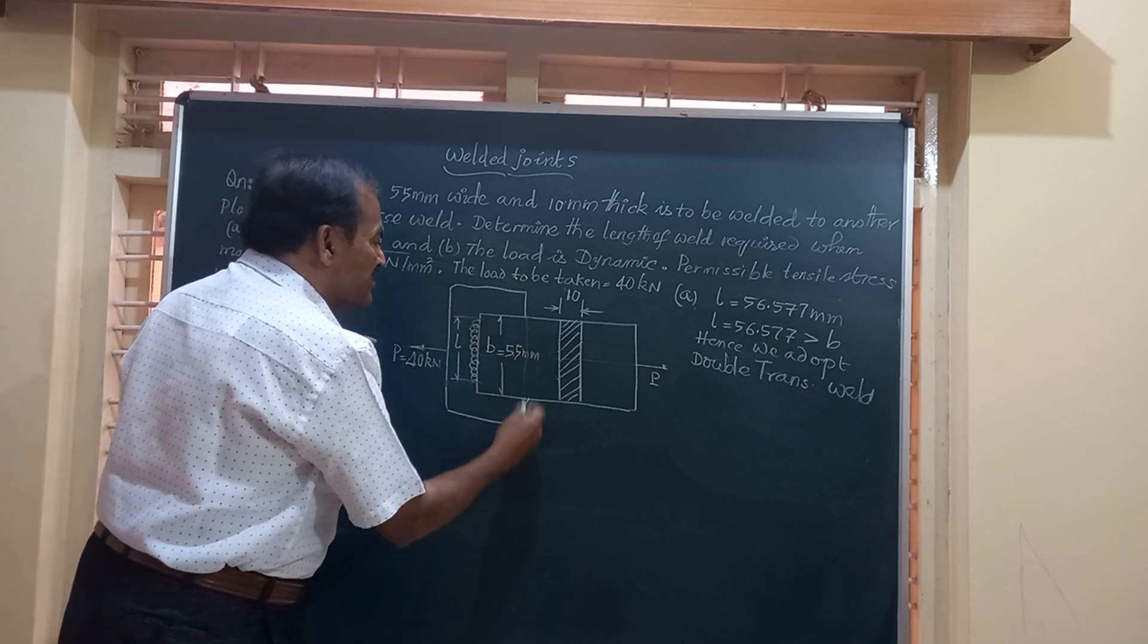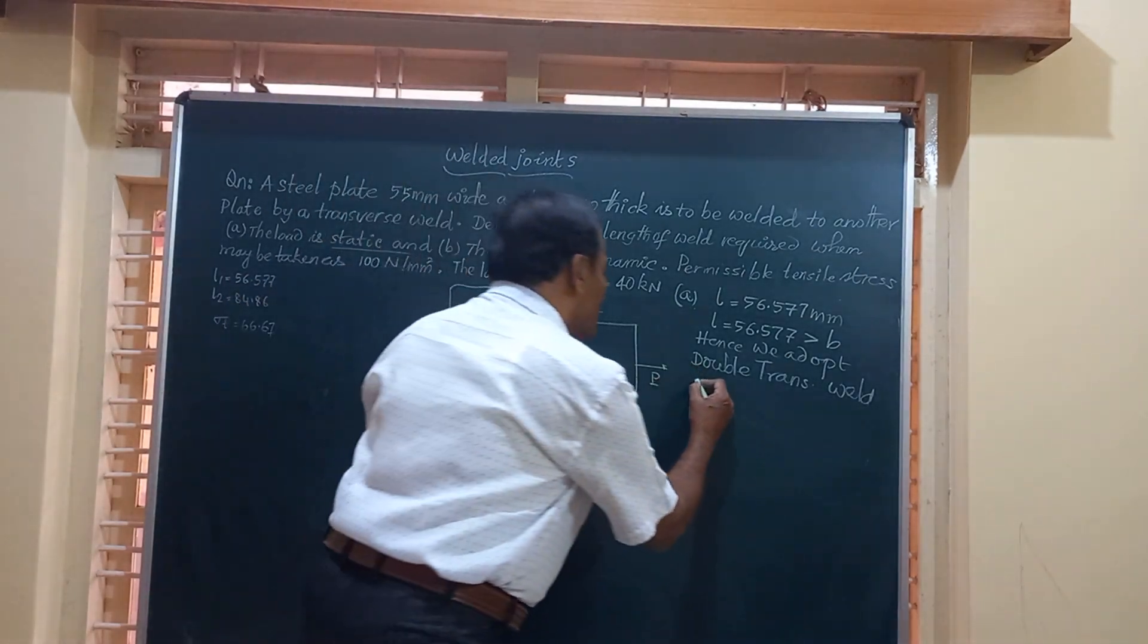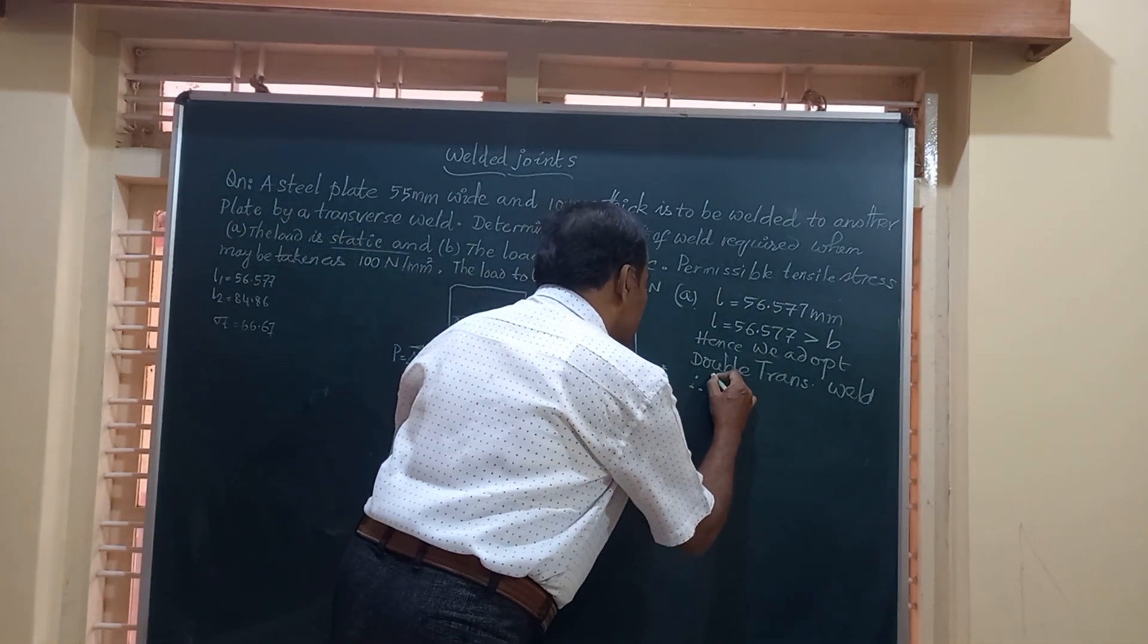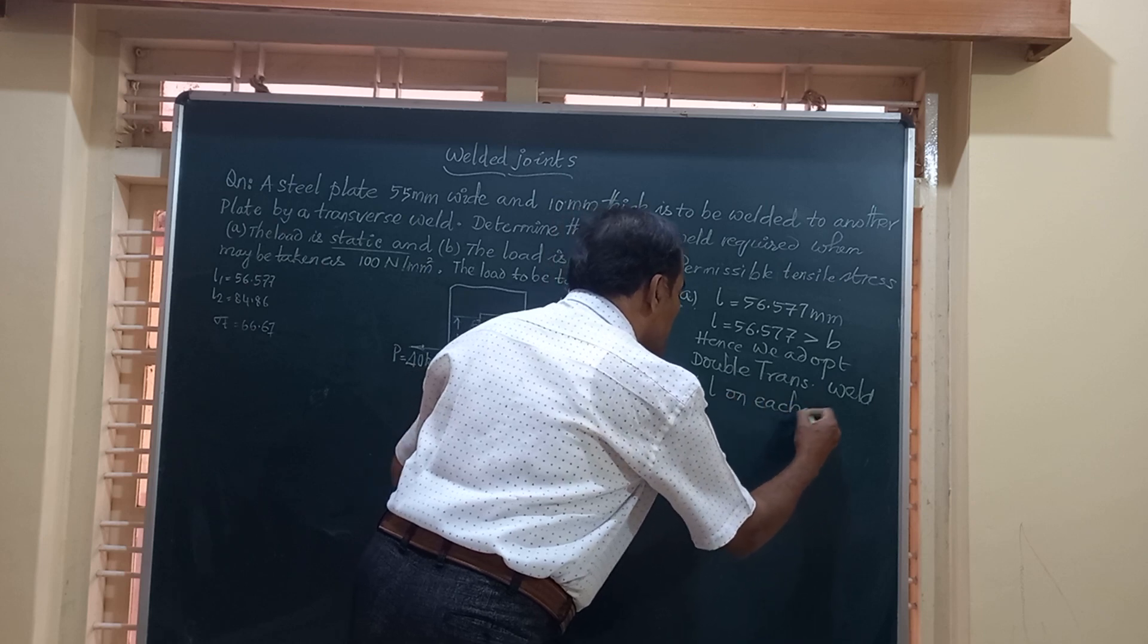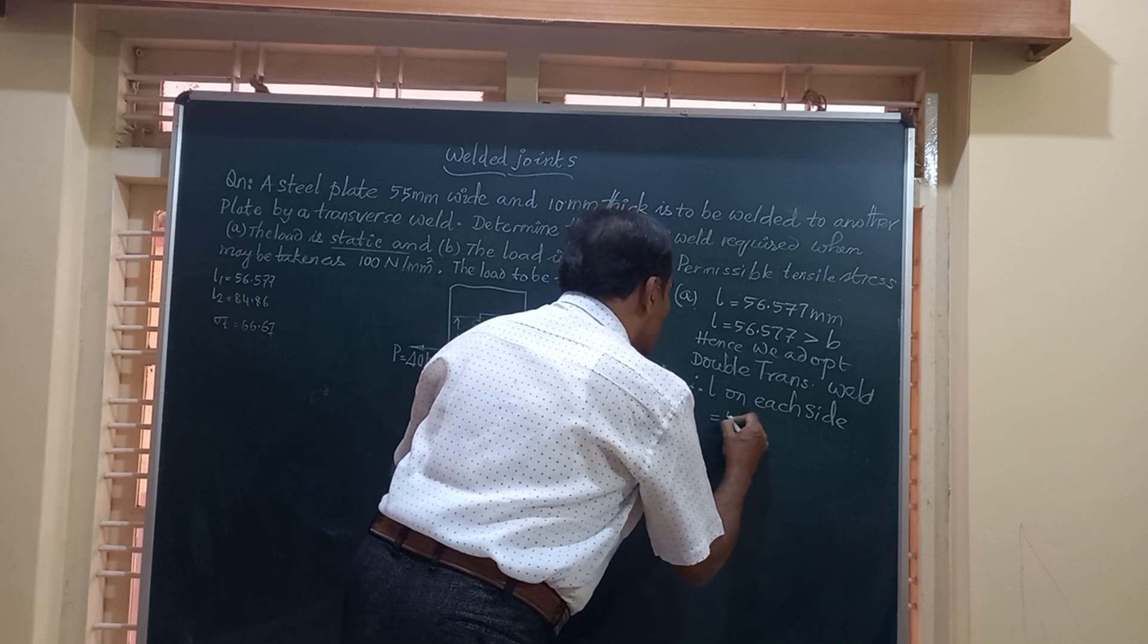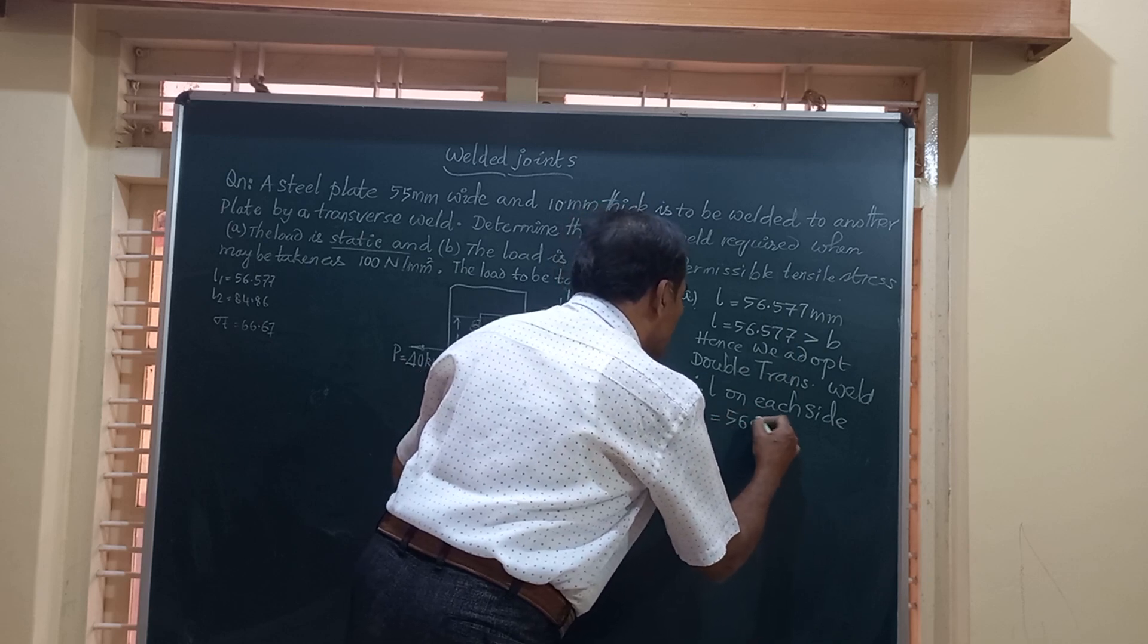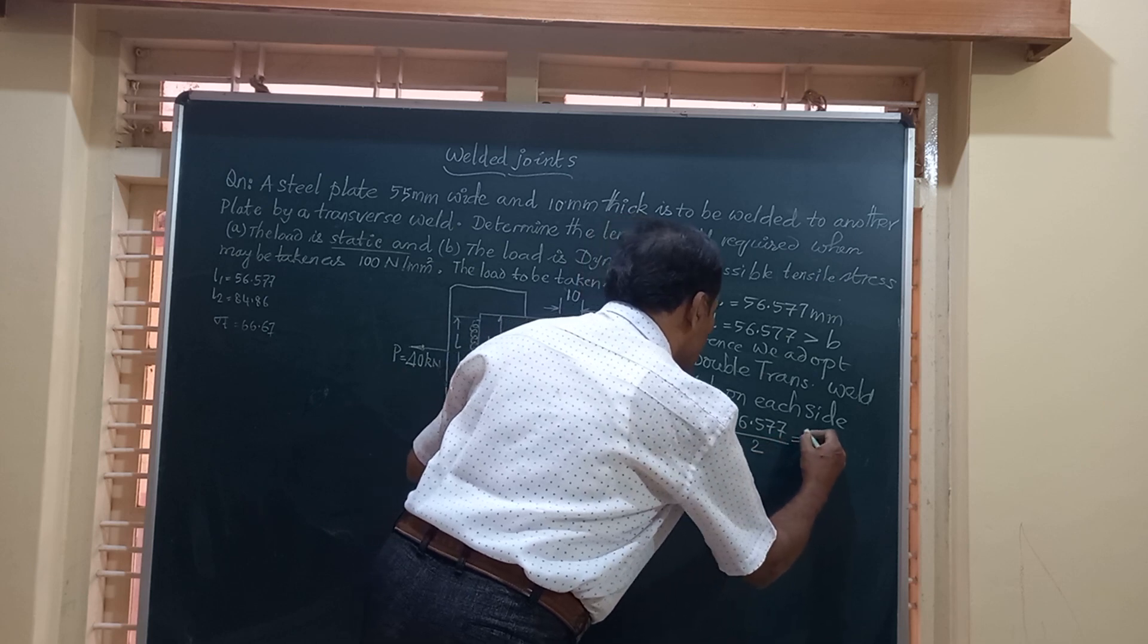Half on top and half below this on the bottom side of the same plate. Therefore, length of weld on each side will be just half of this, is equal to 56.577 divided by 2, that works out to 28.28 mm.